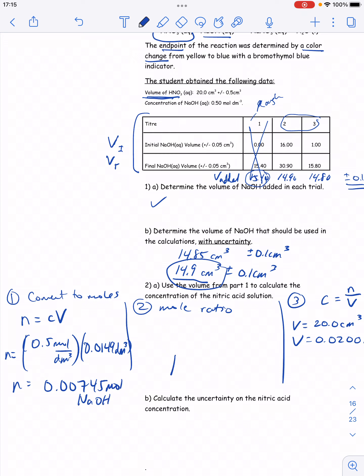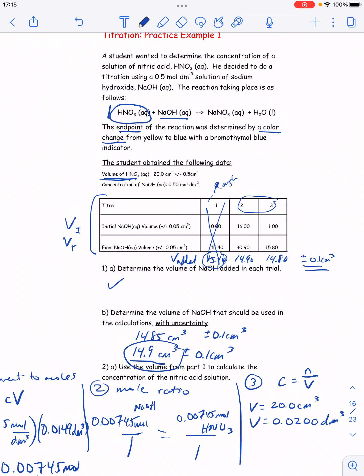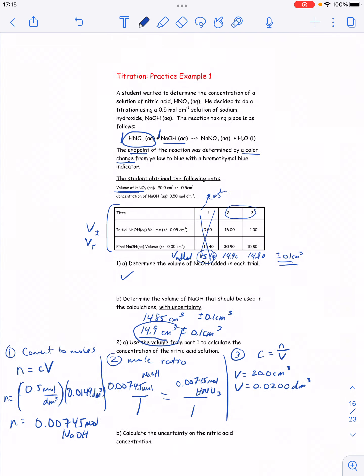In this question, we have a 1 to 1 mole ratio. So 0.00745 moles of NaOH means that there must have been 0.00745 moles of HNO3. Again, I know that because of the chemical equation. One nitric acid, one NaOH.